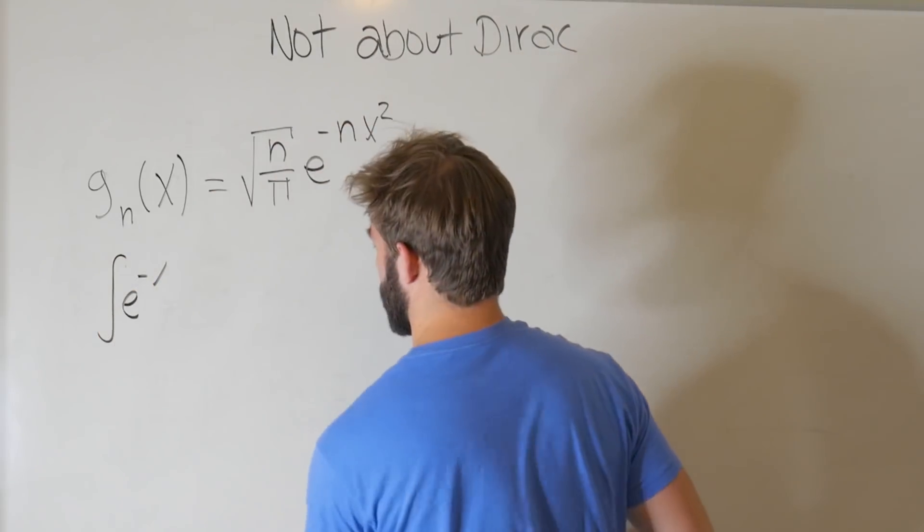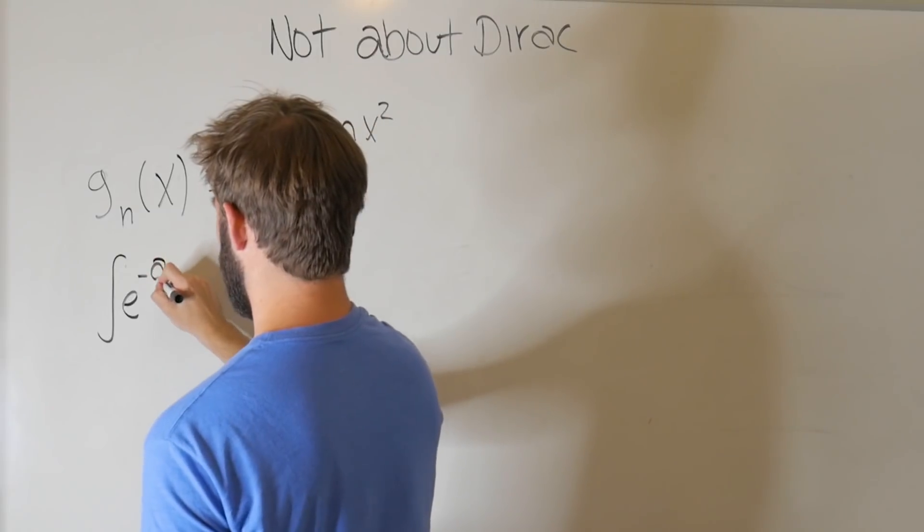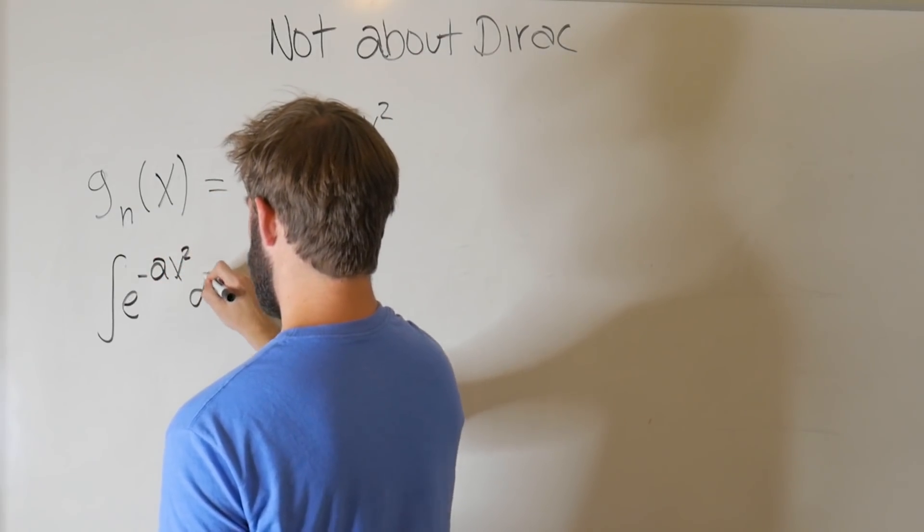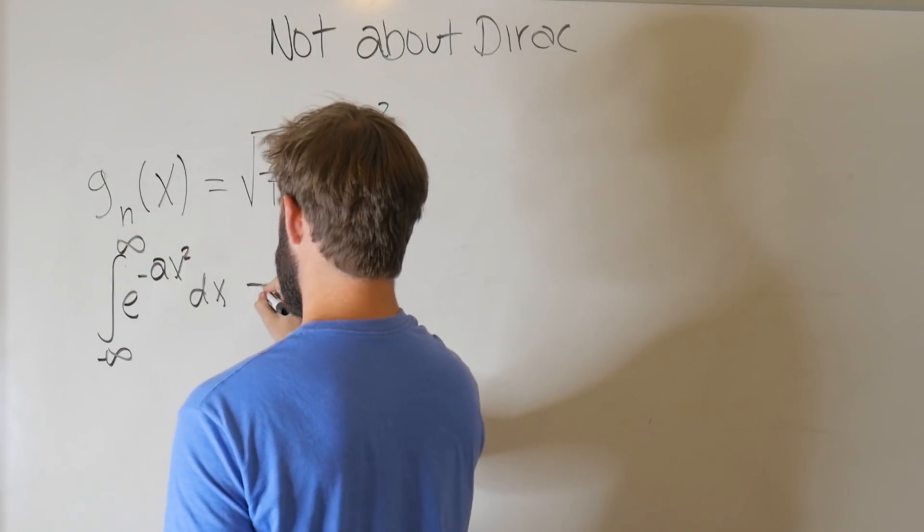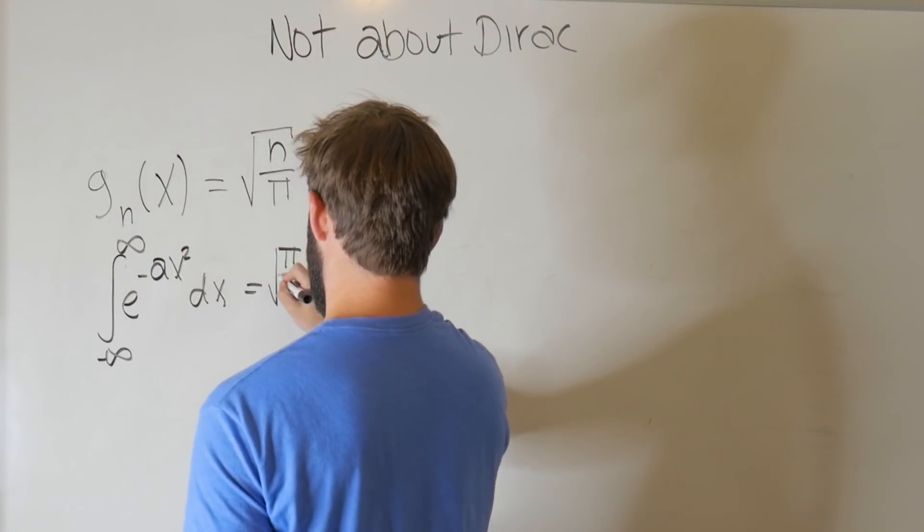But the integral of e to the minus, let's say, a x squared, with respect to x, from negative infinity to infinity, is equal to the square root of pi over a.